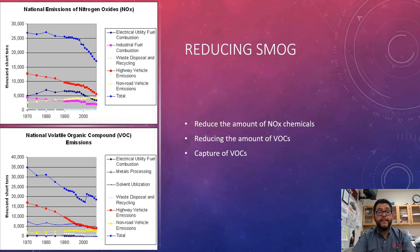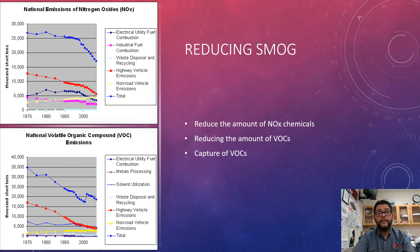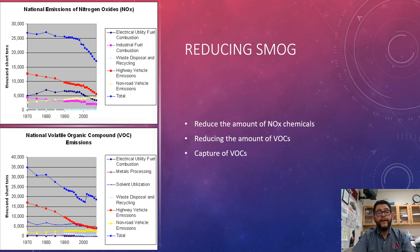We mentioned the Clean Air Act in the last video, and reducing smog has been an important part. As we've gone through time since the 70s with the Clean Air Act, the reduction of nitrogen oxides has really helped in reducing photochemical smog. The capturing and preventing of VOCs from getting into the atmosphere has also been a big help. You can't really find a way to get rid of photochemical smog itself — you have to get rid of the sources that form it. That's an important thing to mention.